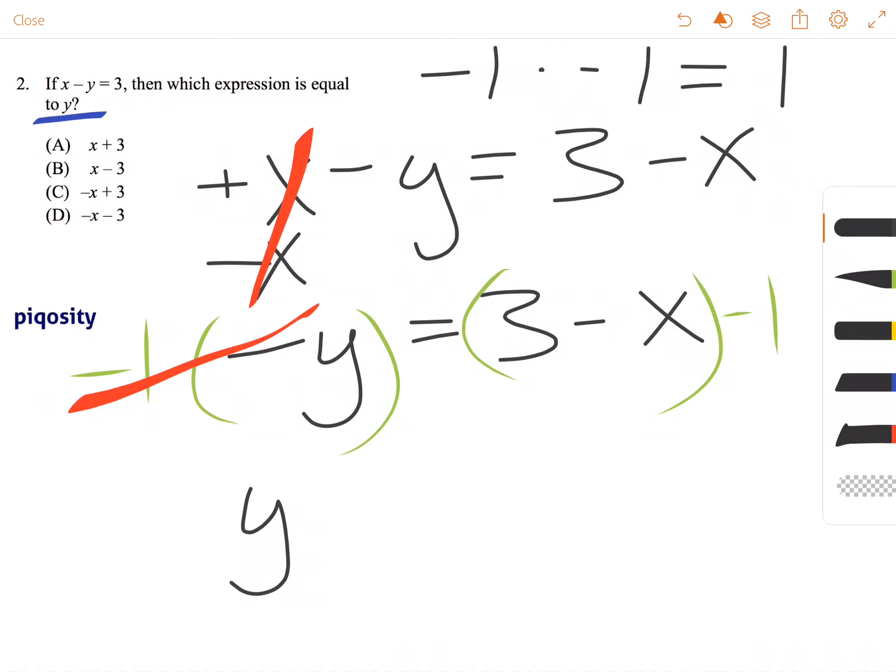so we have y equals positive x minus 3. But then we have to multiply this negative 1 to each of these values. So we get negative 3 plus x, since these two negative symbols cancel each other out.